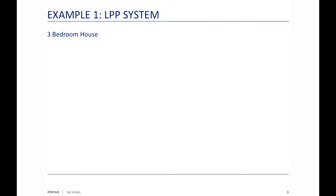In Example 1 — and if you have the SSE training manual, we're on page 34 — we've got a three-bedroom house. Most local codes say 150 gallons per day per bedroom. I have to word it that way because I'm speaking in generalities. Generally speaking it's 150 gallons per day per bedroom, but you have to know your local codes and follow them, because if your local codes are different it could cause a problem.